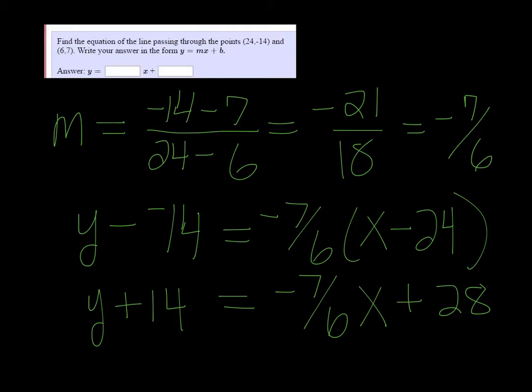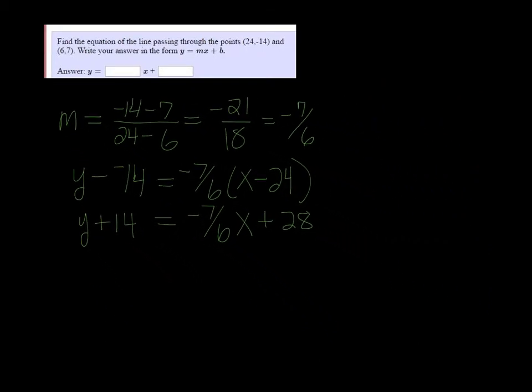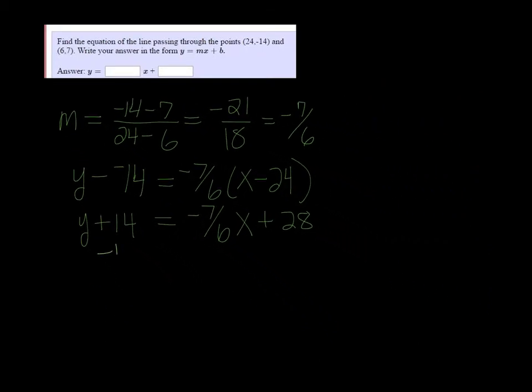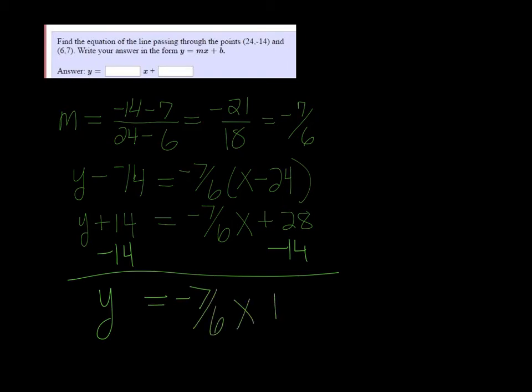And lastly, we need to subtract 14 on both sides. So we get y is equal to negative 7 over 6x plus 14.